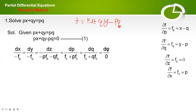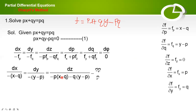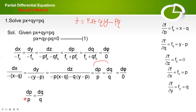fx with respect to x: the qy term is constant giving 0, the pq term is constant giving 0, and px gives p. So fx equal to p. Similarly, fy equal to q. Now substitute all values in the subsidiary equation. From this, you can easily find the value of either p or q. We get dp/p equal to dq/q. Therefore, log p equal to log q plus log c, which gives p equal to qc.